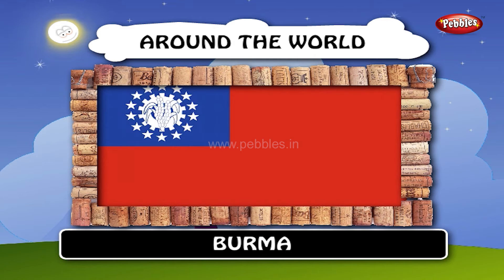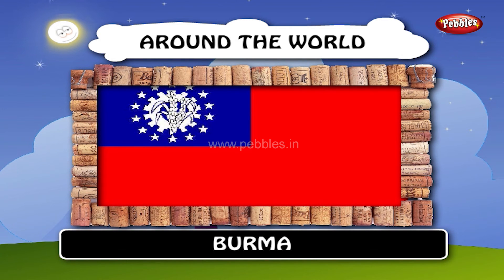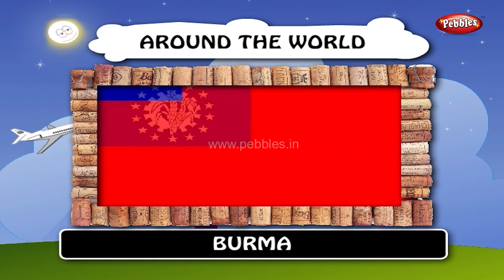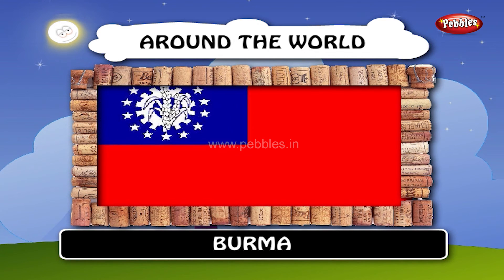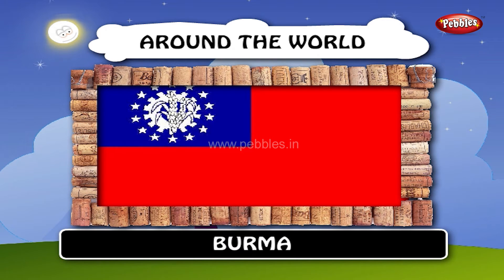Burma — the flag of Burma was adopted on January 3rd, 1974, upon the declaration of a socialist republic in Burma by Ne Win. The flag originated in the Burma resistance, which adopted a red flag with a white star when fighting the occupying Japanese forces during World War II. Upon independence, the star was modified to a blue canton with five small stars surrounding one large one, symbolizing the unity of the country's diverse peoples.